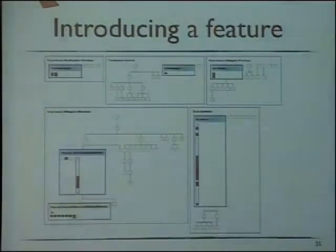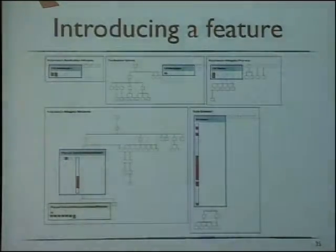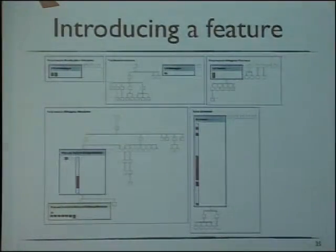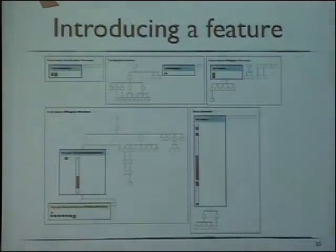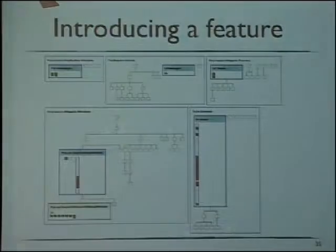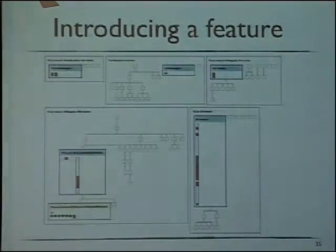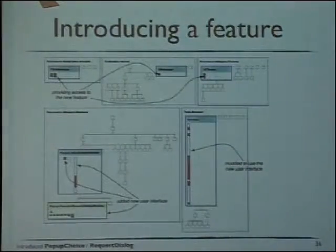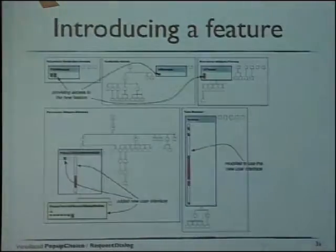Introducing a feature follows a similar pattern — instead of big removals, you'll have big additions and some modifications introducing the new feature. It's important to mention that the dashboard reflects the changes the committer submitted. The idea is to have one change or one big change representing a submitted task, so the dashboard reflects that. But if a developer solves several unrelated bugs and makes one submission, it would be difficult to see that pattern because you'd have many additions and modifications. You have additions and modifications introducing the new user interface.